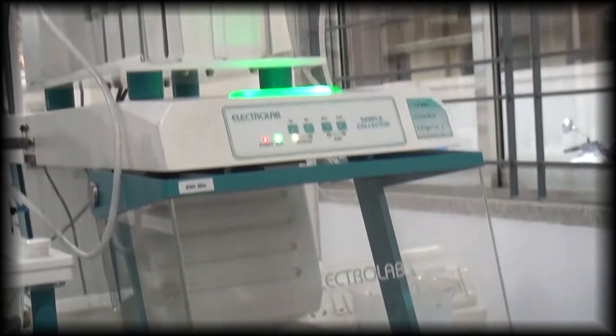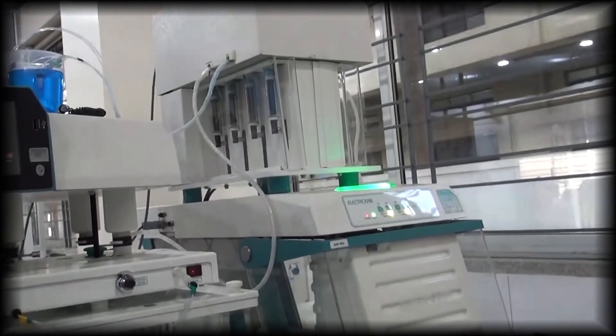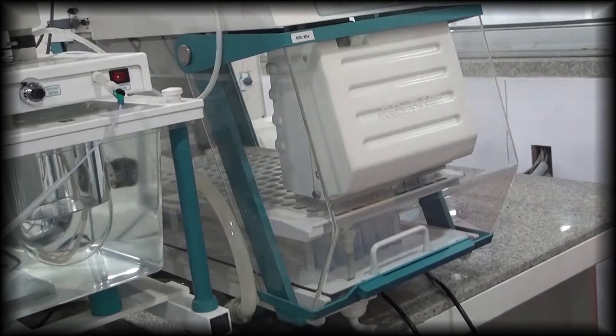Before the collection of the sample, the autosampler carries out a rinsing cycle of split rinse of 3 milliliters and dispenses it to the waste in order to prevent carryover of the previous sample concentration.